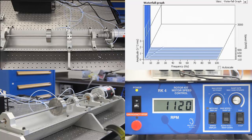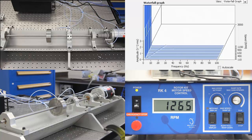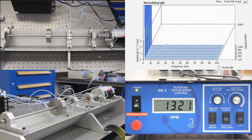For each driving speed the waterfall plot will show the amplitude of vibration. As the rotation speed nears the natural frequency of the system, the amplitude of the vibration increases.